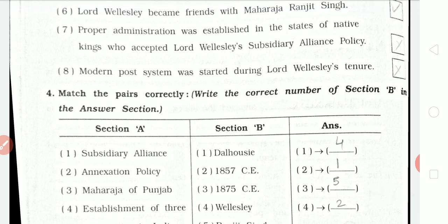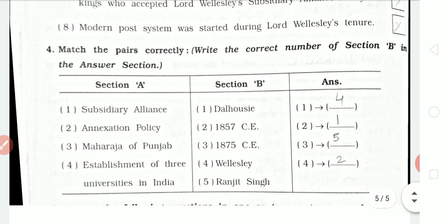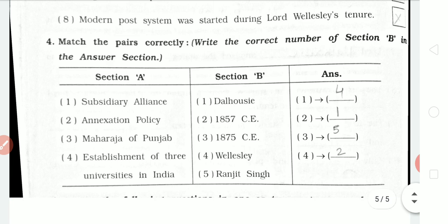Now, match the following. First: Subsidiary Alliance — answer is Wellesley. Second: Annexation Policy — answer is Dalhousie. Third: Maharaja of Punjab — answer is Ranjit Singh. Fourth: Establishment of three universities in India — answer is 1857.